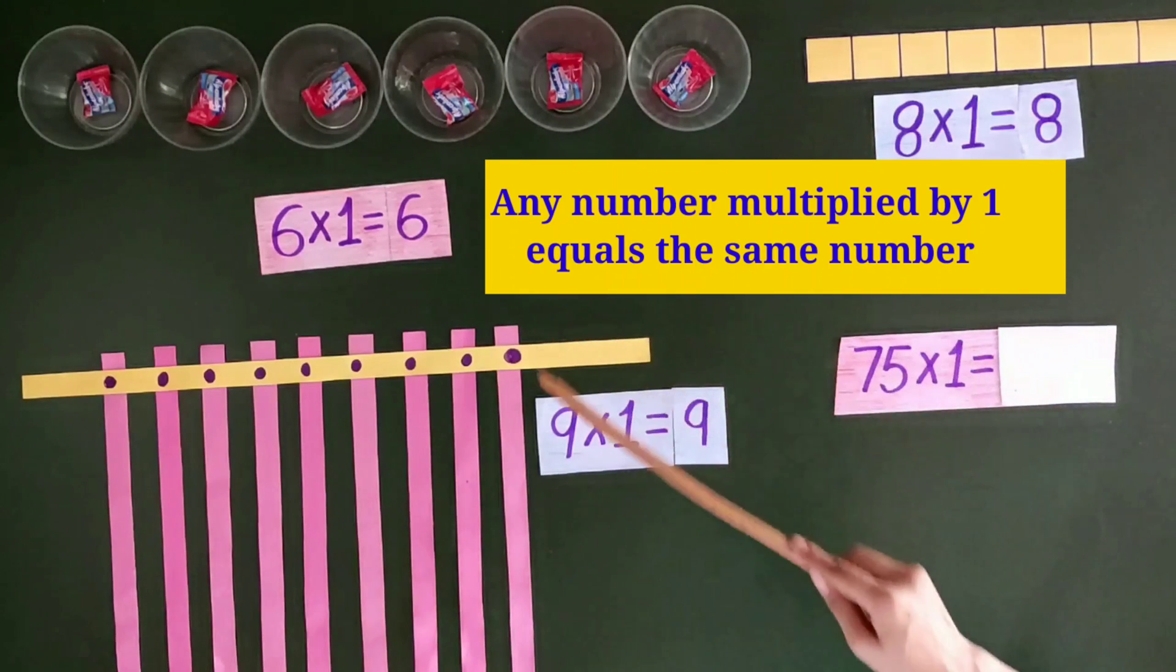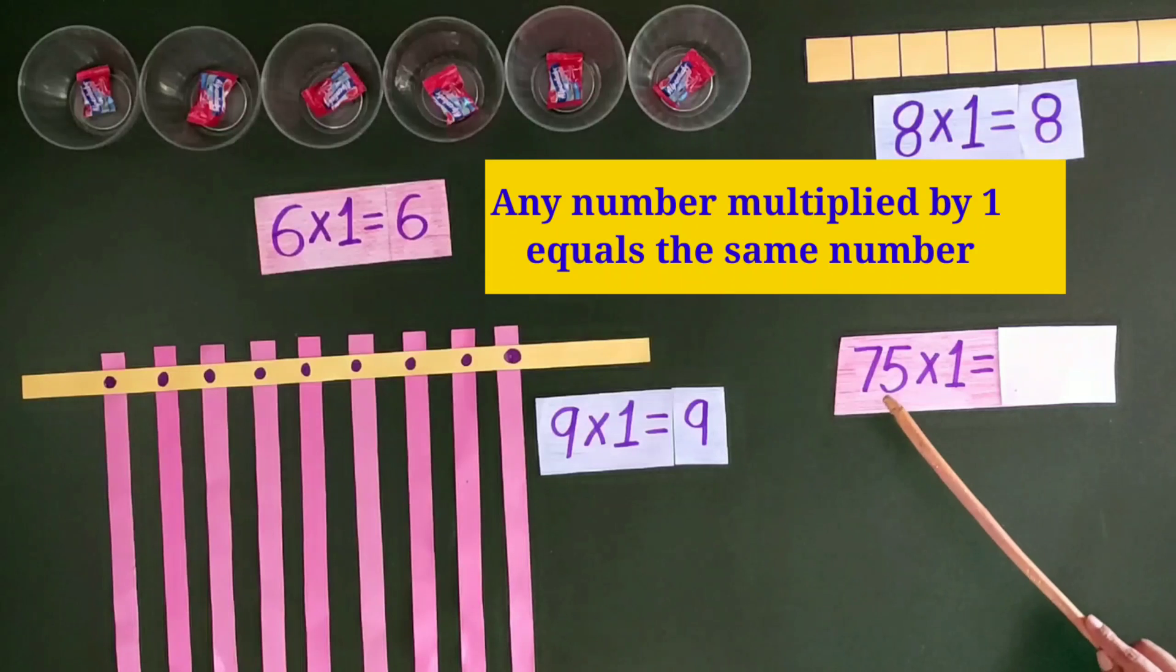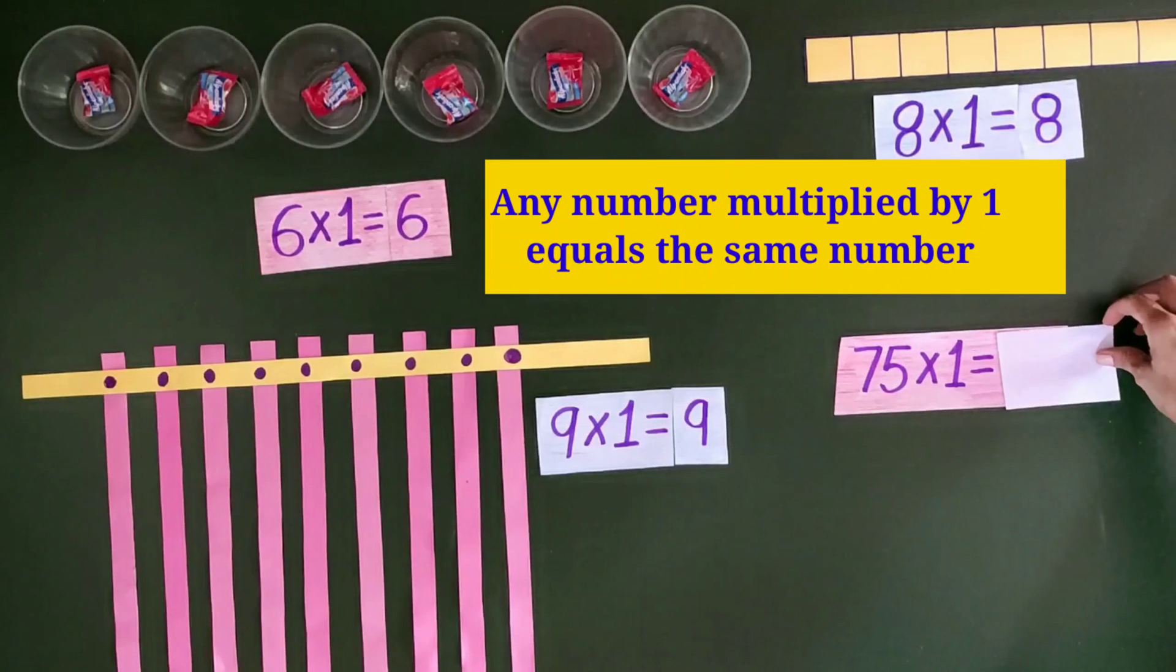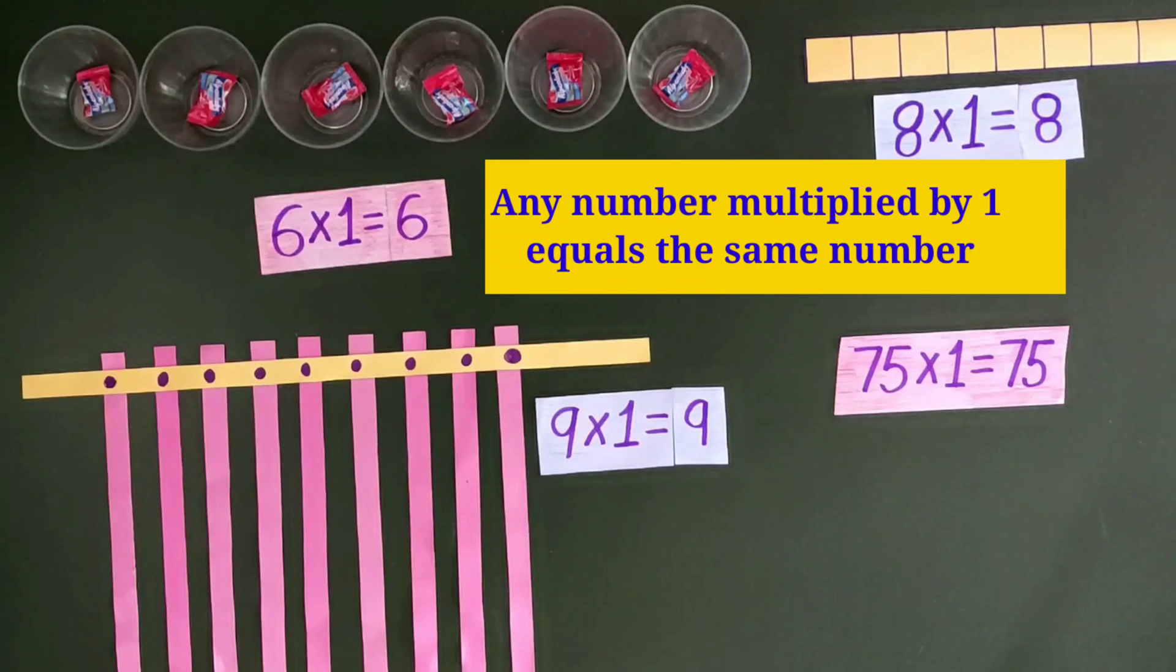And this property of multiplication applies to all the numbers. So 75 multiplied by 1 equals 75, the same number itself.